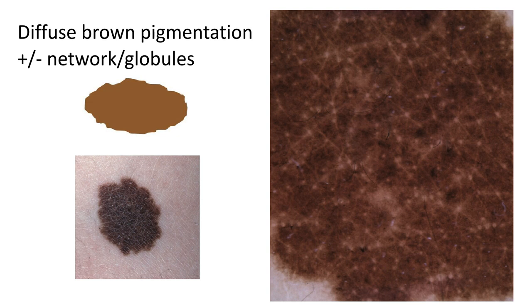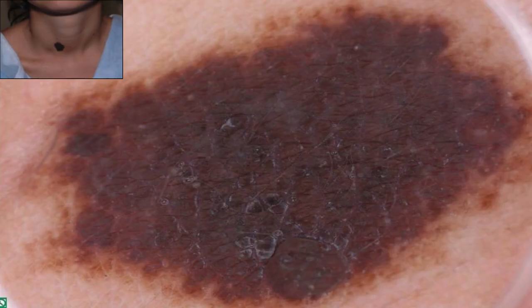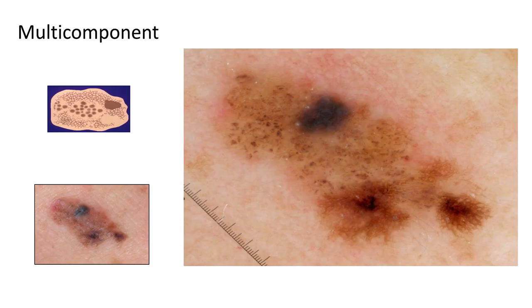The next pattern is diffuse brown structureless pigmentation. The predominance of the lesion will show structureless brown pigmentation, but you may see a few remnants of network or globules. In this example, there is predominantly structureless brown pigmentation with a few globules interspersed. Another example shows brown structureless pigmentation.